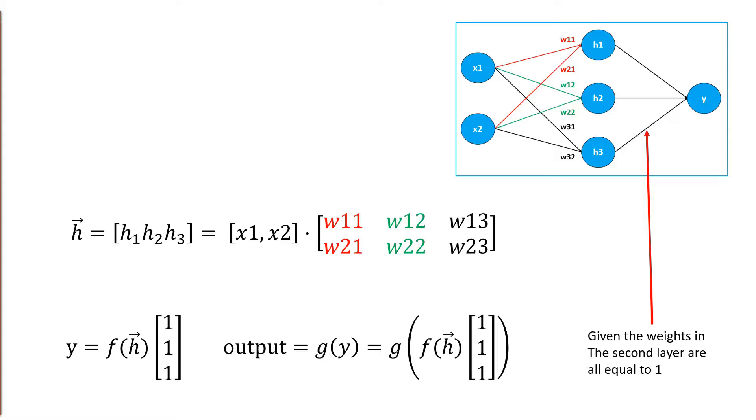Afterwards, we calculate the real output of the network, because here we have, like I said before, an activation function in the output node as well, which is g from y. So to get the whole output of the network, we need to take the calculated y and calculate it in the function g. So the whole term looks like we have a function g which we apply to the function f from the vector h with the matrix multiplication of the weights, which are all 1 here.